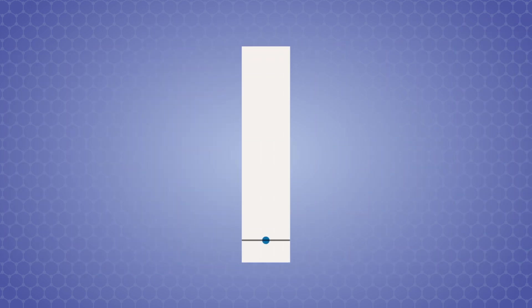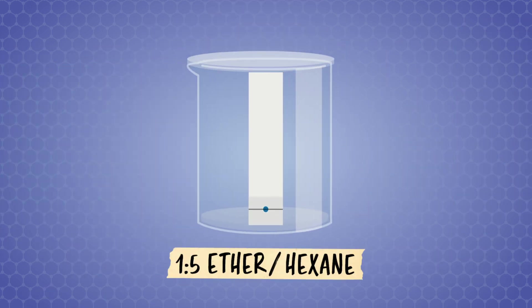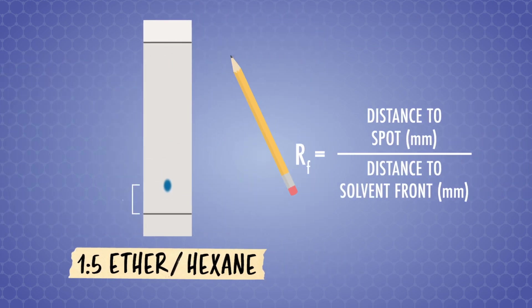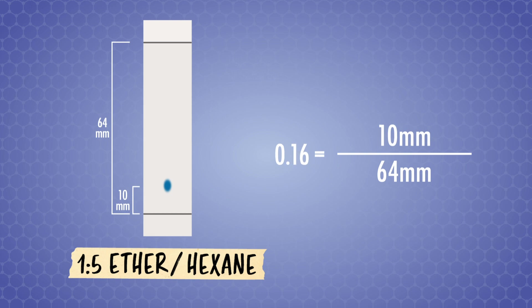Now, let's try a different ratio by increasing the hexane, the nonpolar solvent in our mobile phase, for a 1 to 5 ratio of ether to hexane. After doing the chromatography experiment, measuring and calculating RF, we only get 0.16. So we can say that the 1 to 5 solvent system has less eluding power than the 1 to 1 solvent system.